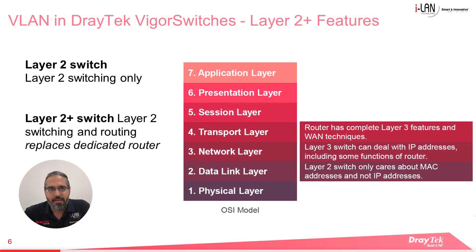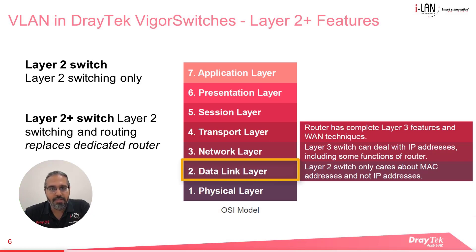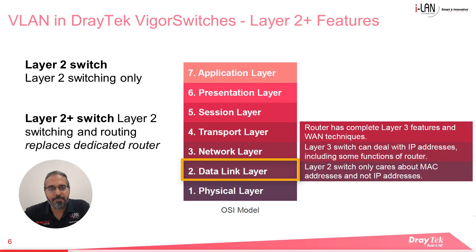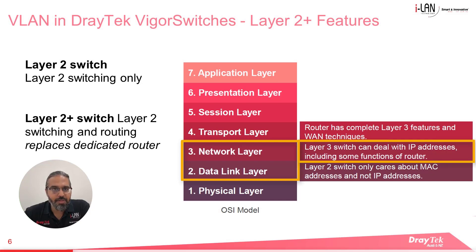Here's a diagram about the different layers in the OSI model, which I'm sure you've seen before. Layer 2 switches operate in the data link layer of the OSI model, so are only concerned with MAC addresses and not IP addresses. Layer 2 Plus switches will handle both the Layer 2 functions as well as some Layer 3 functions in the network layer, so they can deal with IP addresses as well as some router functions.